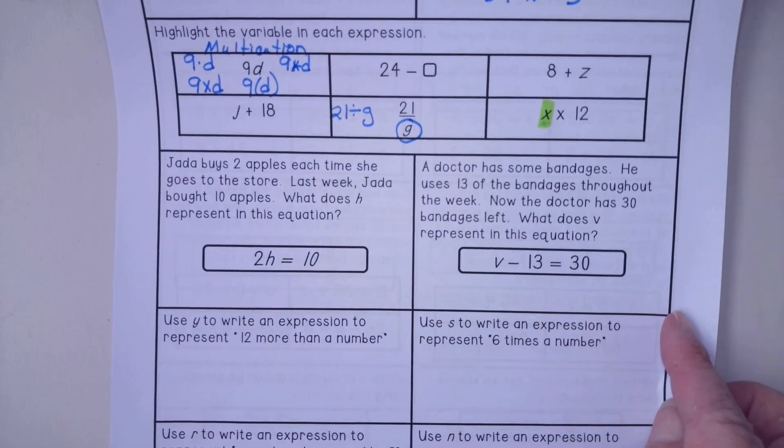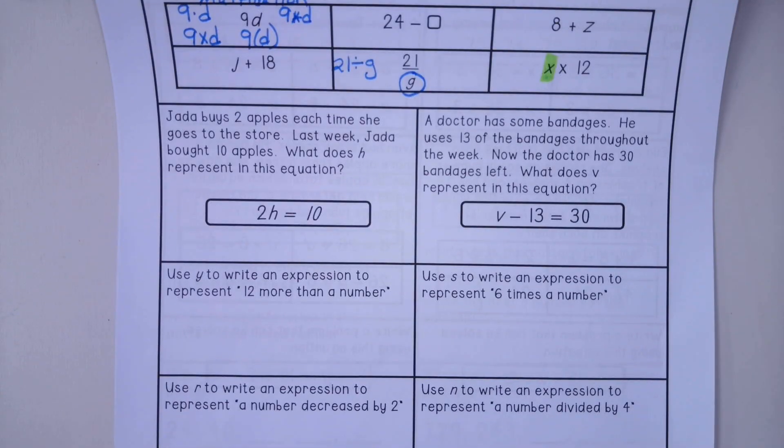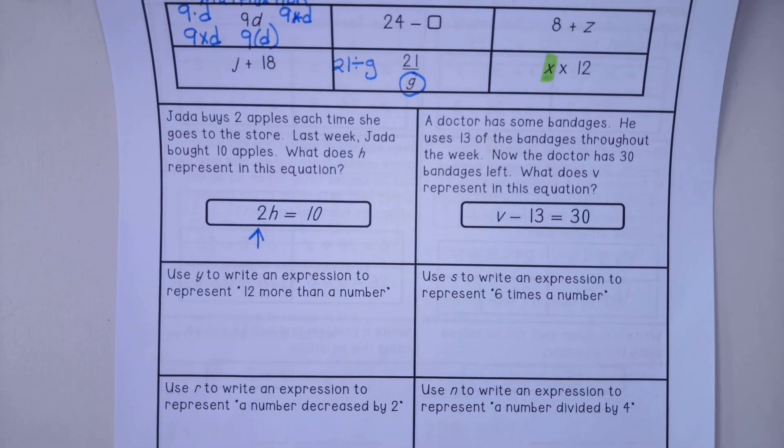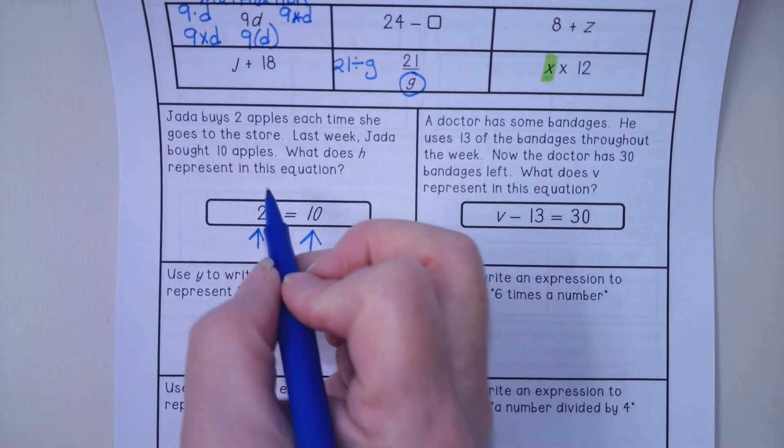The homework is very similar to what you did the last couple of days. So I'll do this side and walk you through it, and you're going to do the other side without my help. It says, Jada buys two apples each time she goes to the store. So here are her two apples. Last week, Jada bought 10 apples.